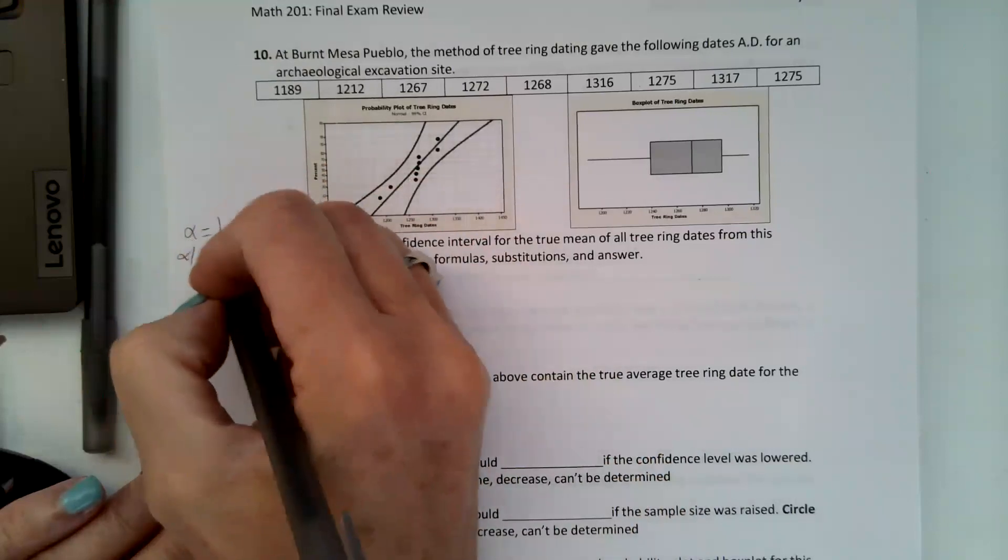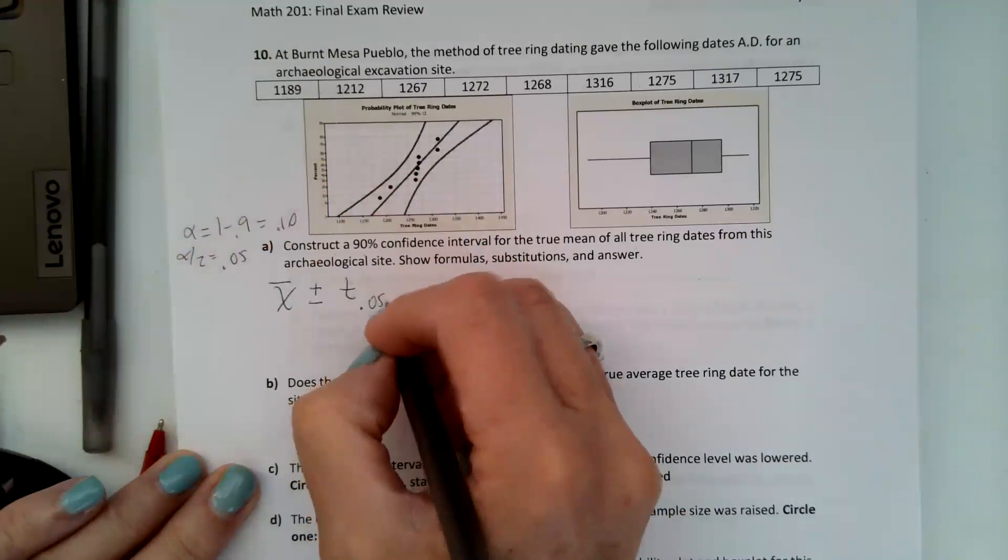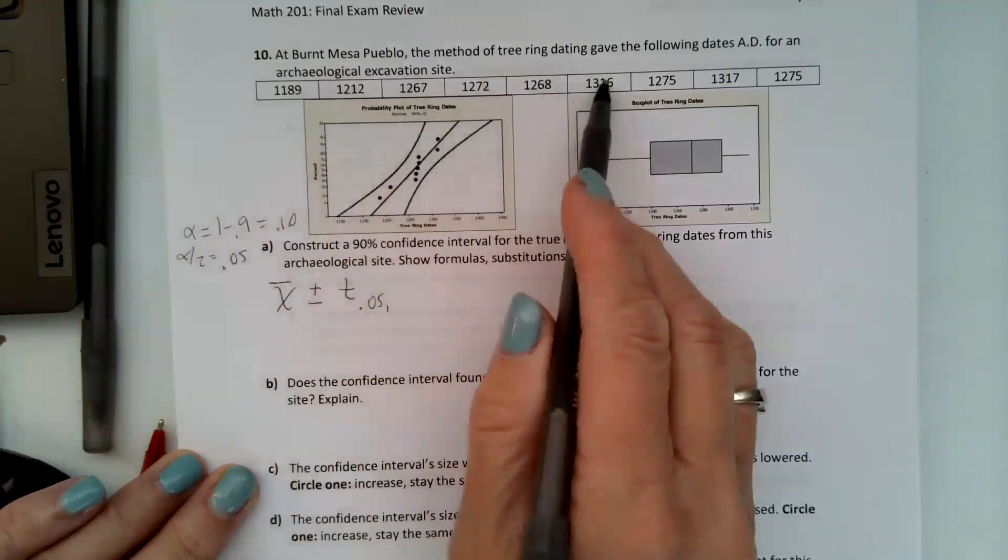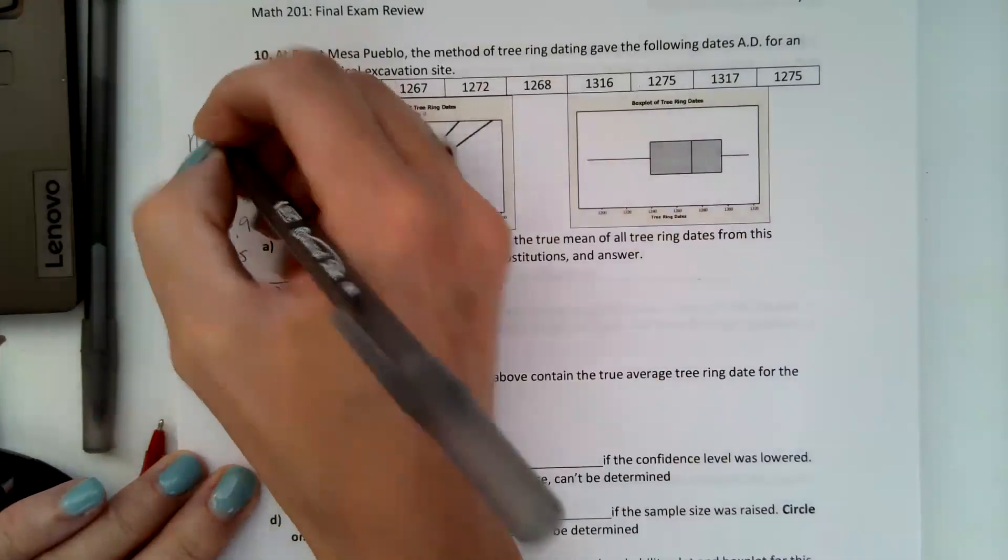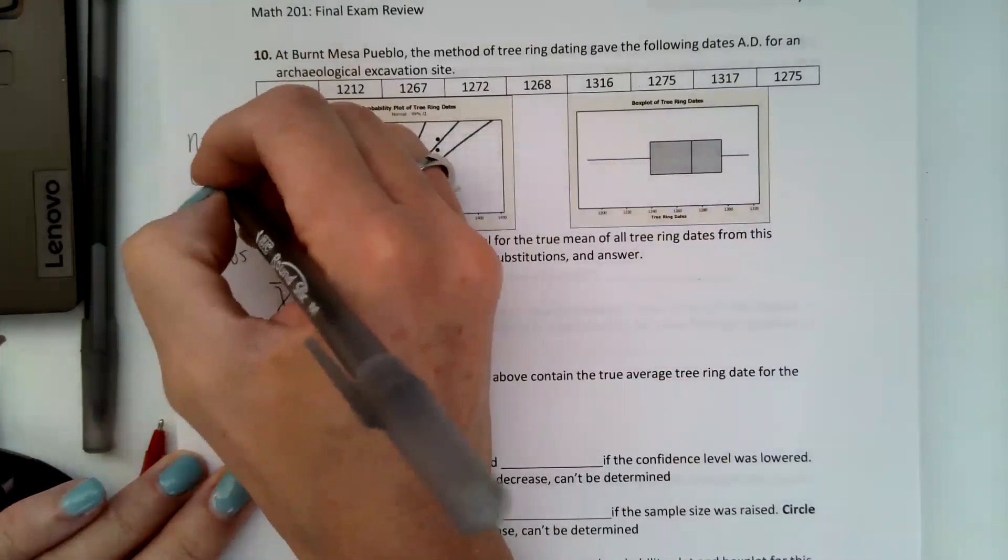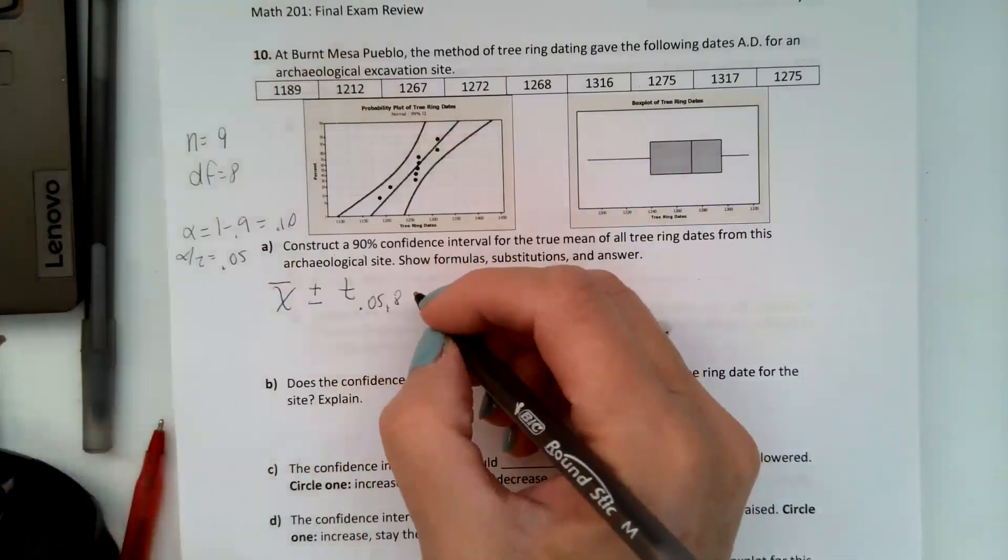So alpha divided by 2 is going to be 0.05. So we need the t of 0.05, and we have nine in our sample so our degrees of freedom is equal to eight.